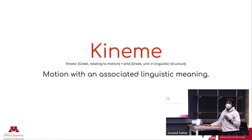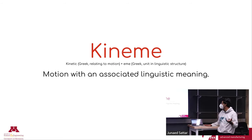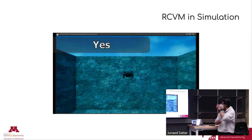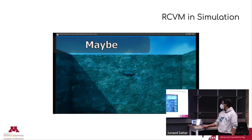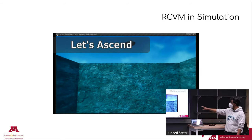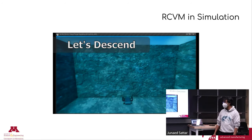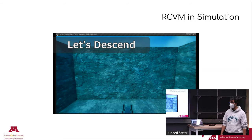Kinemes are an interesting proposition — a word we found to indicate motion-related linguistic structure, like hand signals meaning 'that way' or 'right.' We've used kinemes for robot-to-robot and robot-to-human communication. This is Mike Fulton's work — essentially his thesis. In simulation, the robot bobs its head meaning yes, shakes for no, or tilts for maybe. 'Let's ascend' means it wants to go up, 'let's descend' means down. This was done in simulation in Unreal Engine partly because it was easy, and partly because the real robot broke, so we did the initial work in simulation and then went to the ocean.